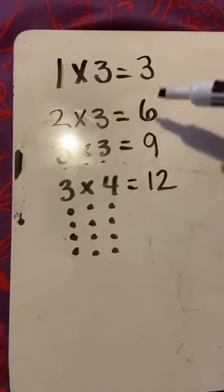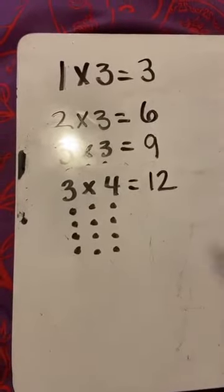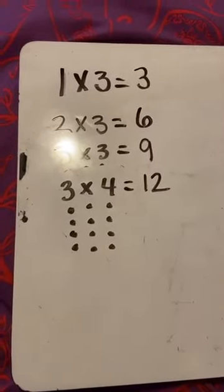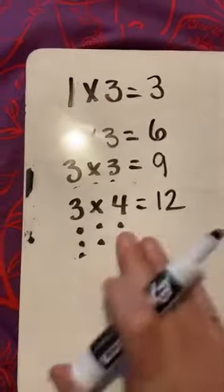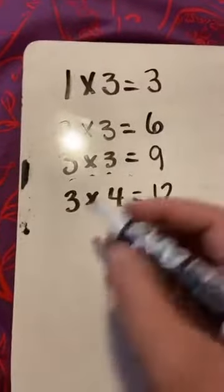What do you notice? 3, 6, 9, 12. What am I doing? I'm adding on 3. Very good. So if I'm adding on 3, I can use that.